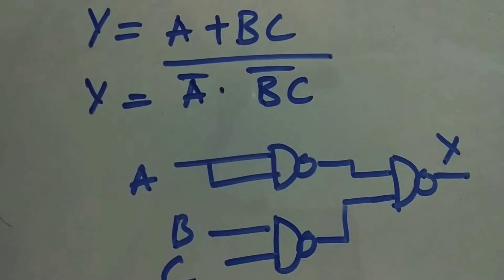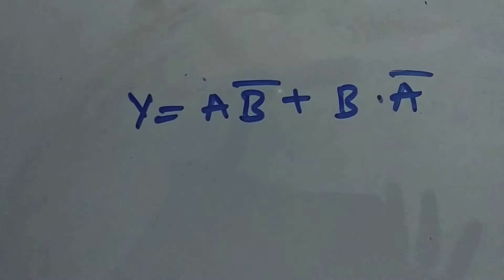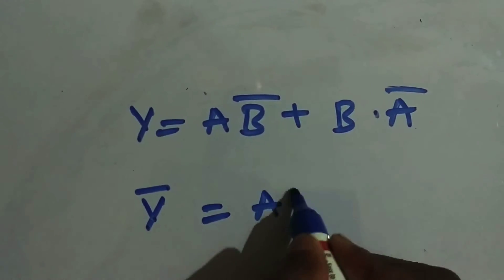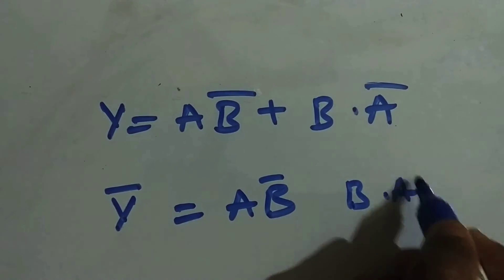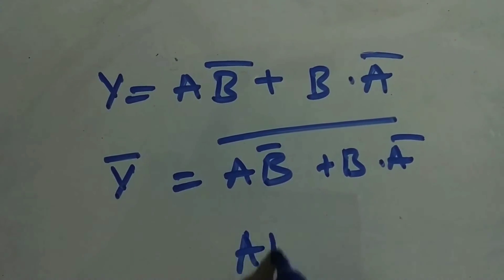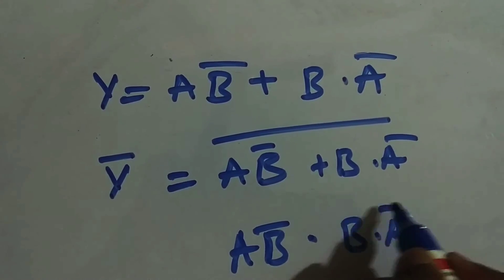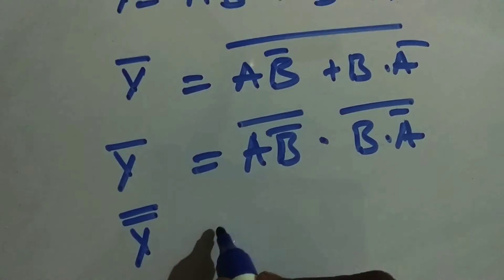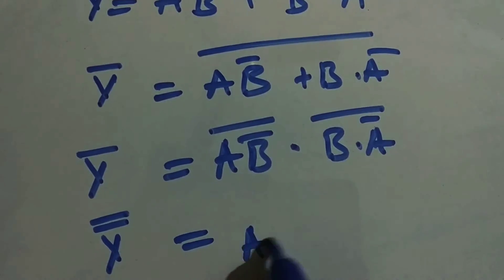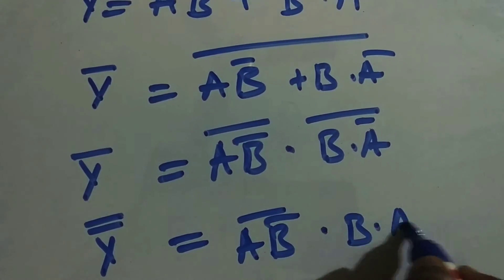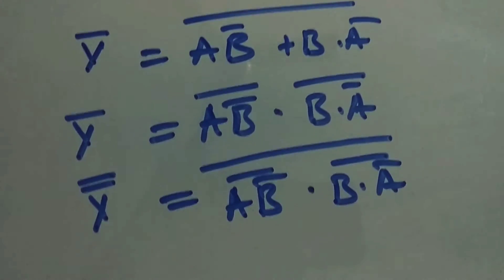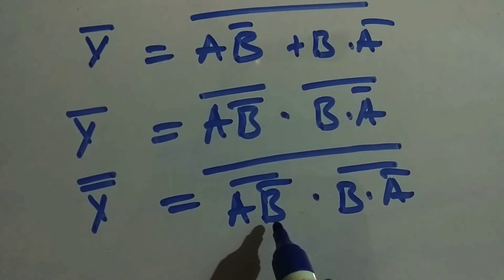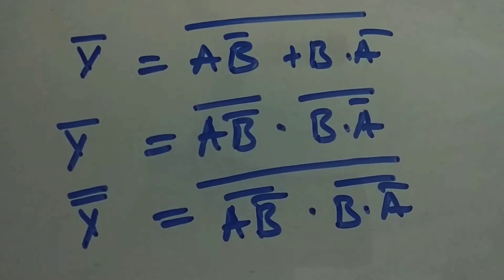Now I'll implement the XOR gate using only NAND gates. The XOR expression is Y equals AB bar plus A bar B. Applying the same steps: Y bar equals AB bar plus A bar B whole bar. Applying De Morgan's theorem: AB bar whole bar dot A bar B whole bar. Note that the NOT gate (for B bar and A bar) is not directly available — we need to implement those also using NAND gates.